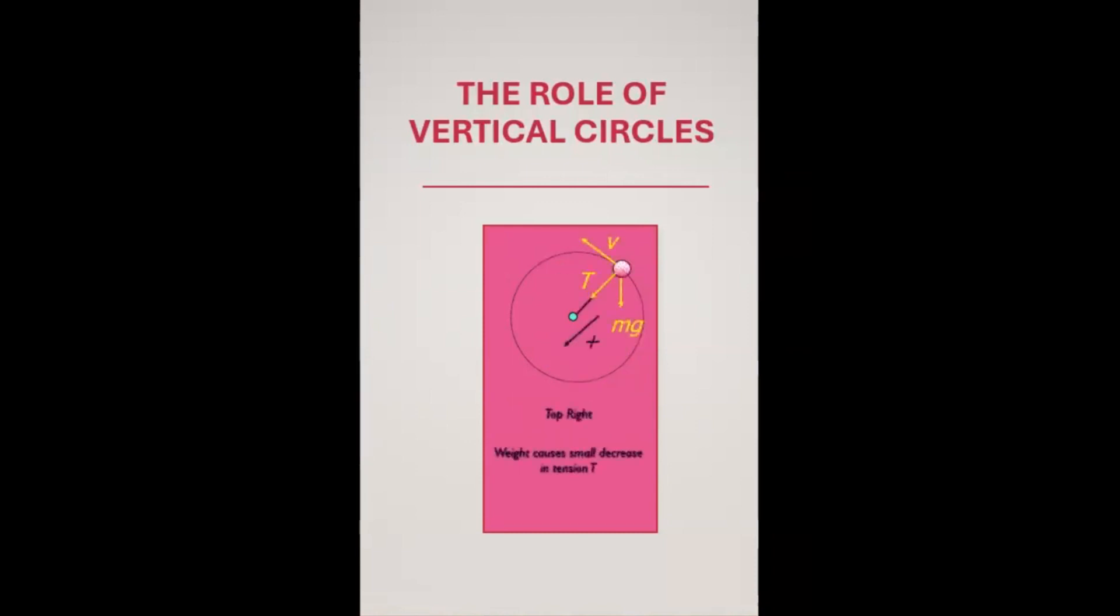On the other hand, at the topmost level of the vertical circle, both tension and weight act inwards. Hence at this point the tension is minimum.